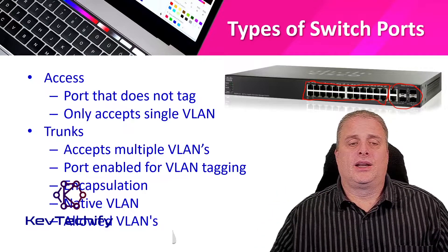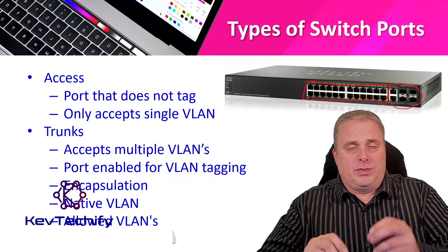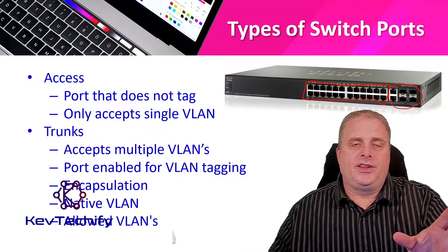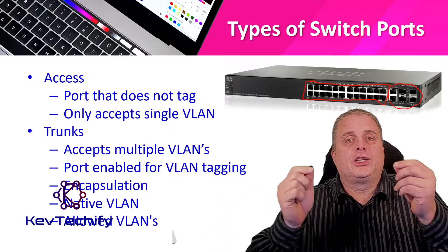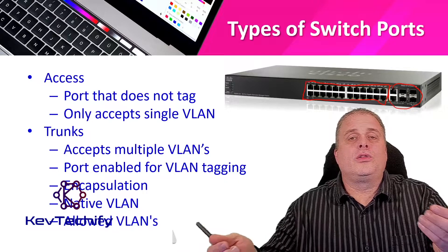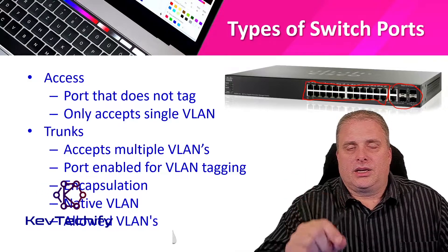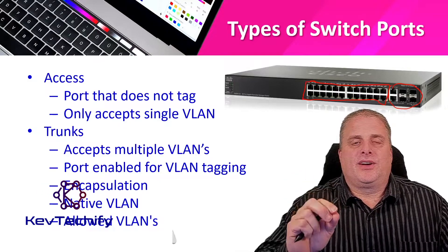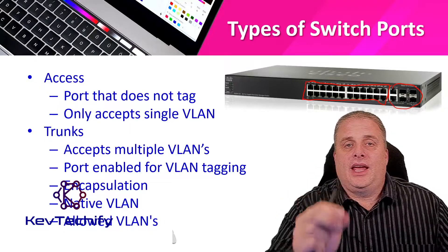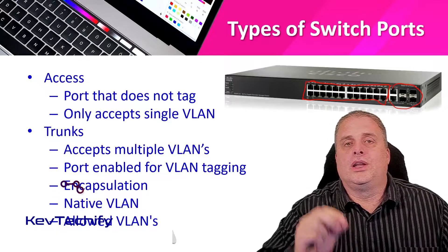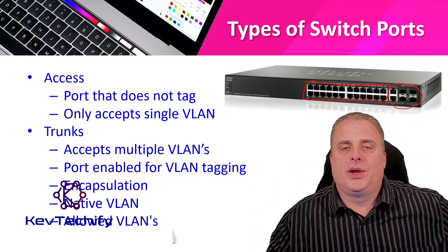Trunks, on the other hand, can accept multiple VLANs' worth of information. Typically, we have trunks between switches — you have multiple VLANs on switch one and switch two, and you need to pass that information between them. We create a trunk port, and it handles all VLAN information, passing it back and forth. That port does VLAN tagging: when you send information across it, it tags and says 'that belongs to VLAN 10, the HR VLAN' or 'VLAN 20, the manufacturing VLAN.' It identifies and encapsulates that information.